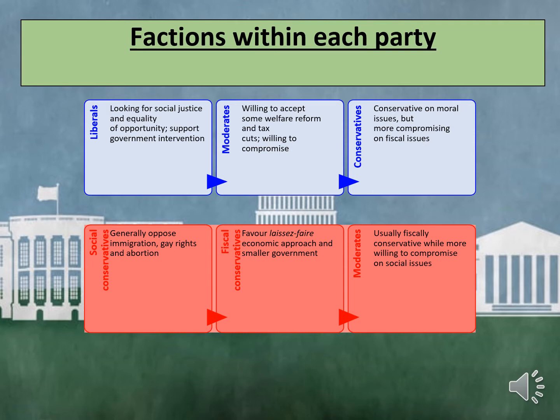Liberals are looking for social justice and equality of opportunity and support government intervention. Moderates are willing to accept some welfare reforms and tax cuts and are also willing to compromise, whilst the most conservative of Democrats are conservative on moral issues but more compromising on fiscal issues.